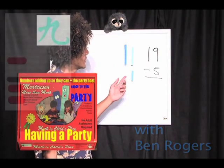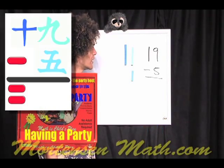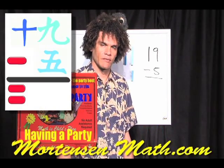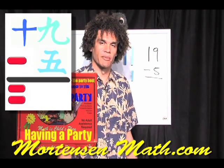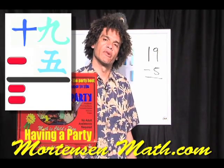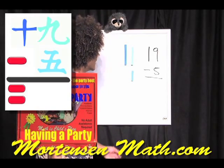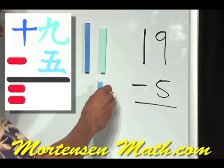Now, here we have 19, take away 5. And we've played games where we understand that numbers are made up of other numbers. And remember, we were having a party with 9. And if 9 had a party and 5 wanted to go, who would he have to bring?